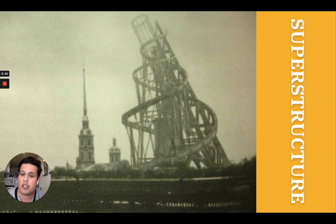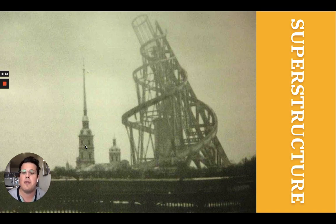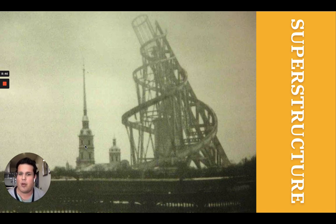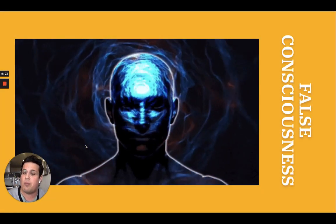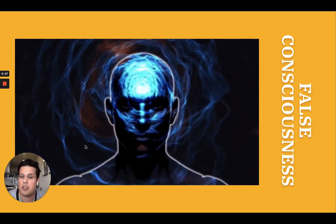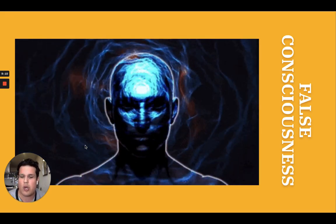Marx believed that structures rather than people or ideas made history. He spoke of human history as functions of the base and the superstructure. The base is a system of economic production including the level of technology — the means of production — and the kind of class relations that exist as a result, the relations of production. Basically, the base is what we understand as reality. Resting on the base is a superstructure which represents all human institutions: politics and the state, national identity and culture, religion and gender, and so on. Marx viewed this superstructure as a system of institutions created to justify and perpetuate the existing order — we try to follow the status quo.